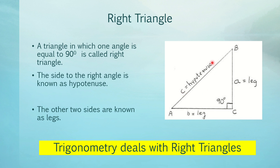We denote the hypotenuse and the sides using small letters, while the angles are written in capital letters. So the hypotenuse here is side AB. The two remaining sides are called the legs, which are leg A and leg B — that is side AC and side BC. Take note that in trigonometry we specifically deal with right triangles.